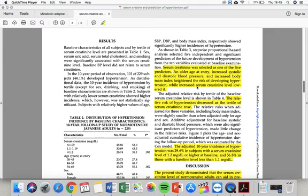In the results, I have underlined the following chunks of text. Serum creatinine was selected as one of the five predictors. An older age at entry, increased systolic and diastolic blood pressure, and increased body mass index heightened the risk of developing hypertension, while increased serum creatinine level lowered it.